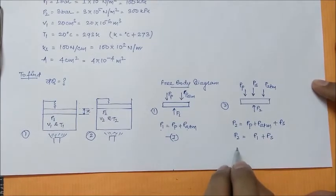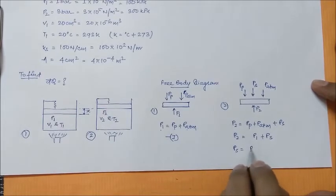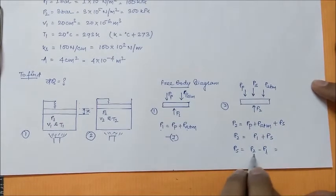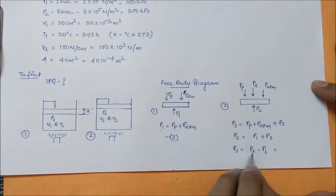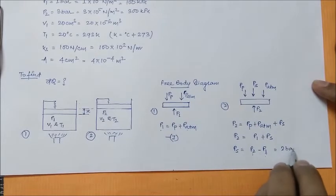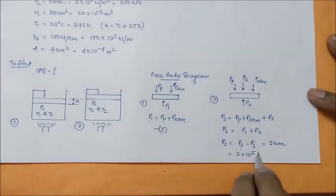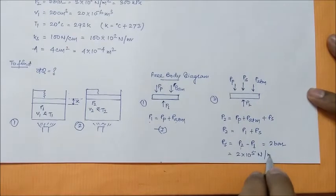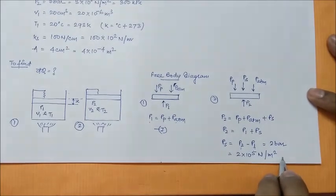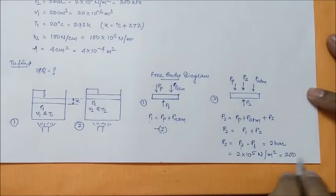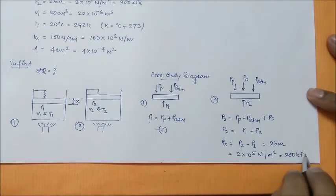Therefore Ps = P2 − P1. We know P2 is 3 bar and P1 is 1 bar, so Ps = 2 bar, or 2×10⁵ N per meter square, or 200 kilopascal.